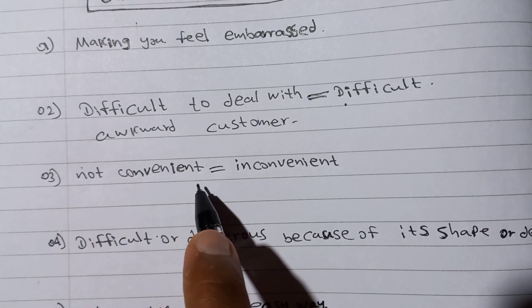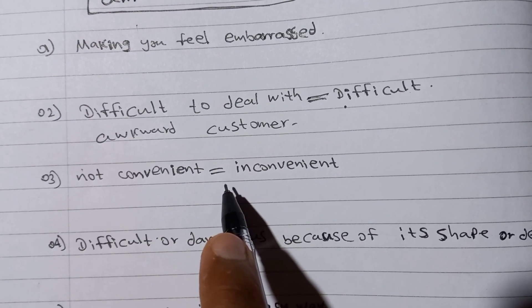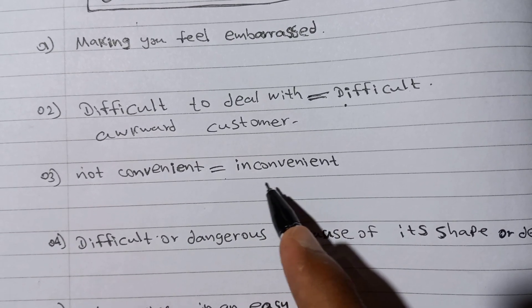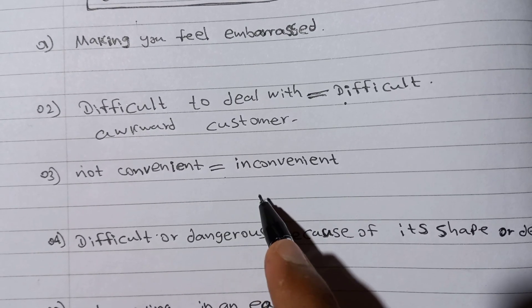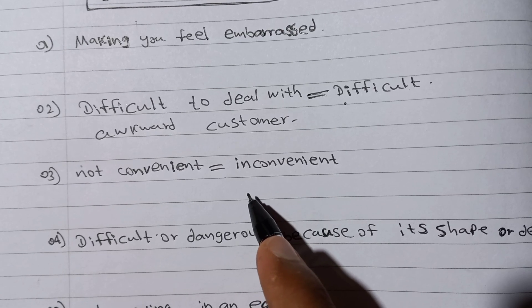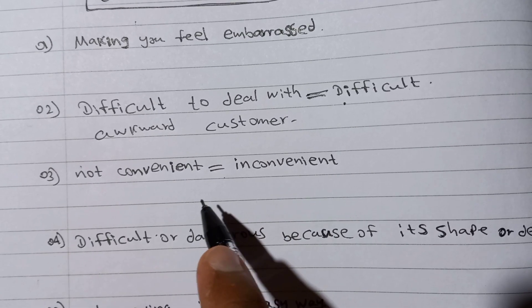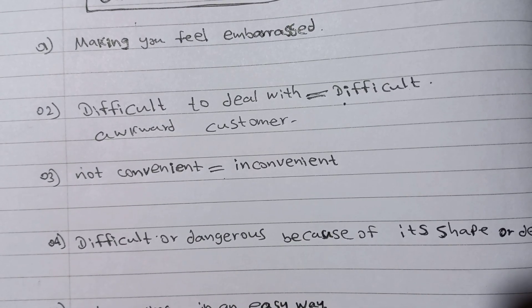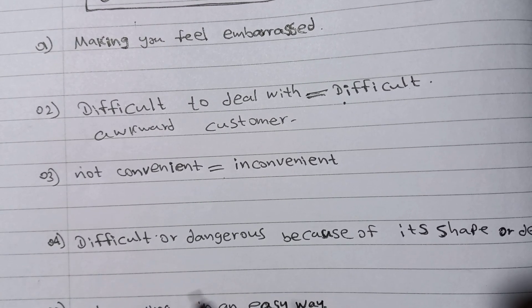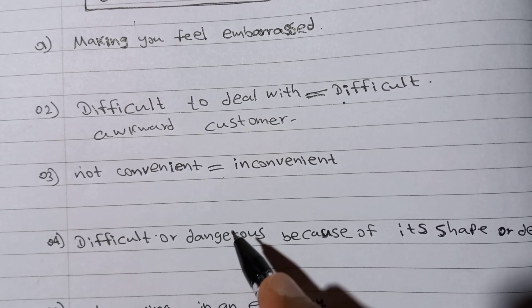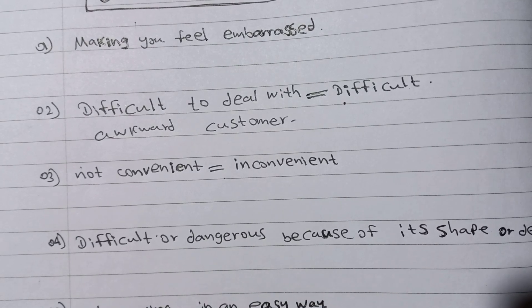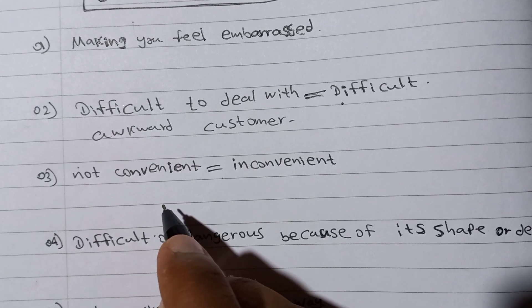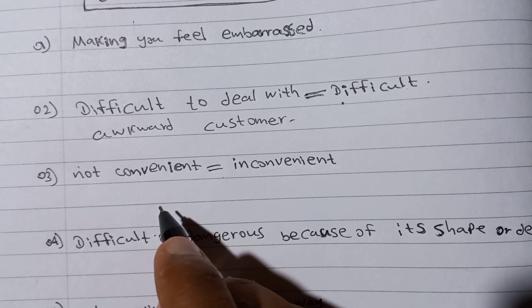The third meaning of awkward is not convenient — it has a similar meaning to inconvenient. For example: how I come at an awkward time? That means, is it inconvenient for you? How I come at an inconvenient time? Inconvenient is the similar meaning of awkward.